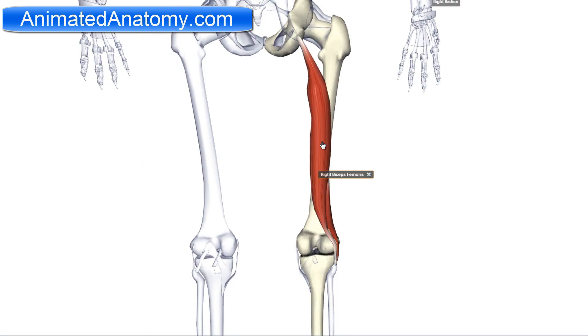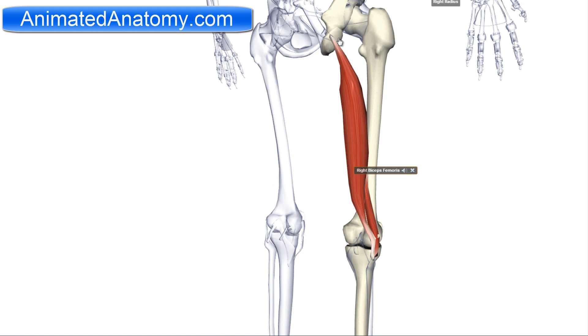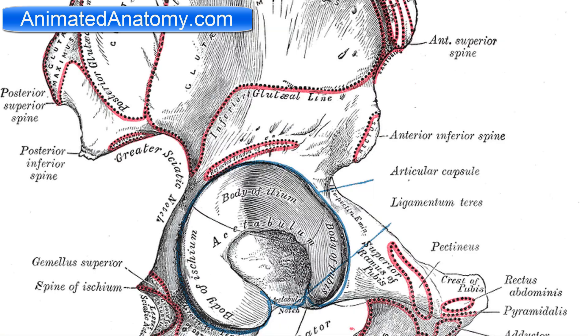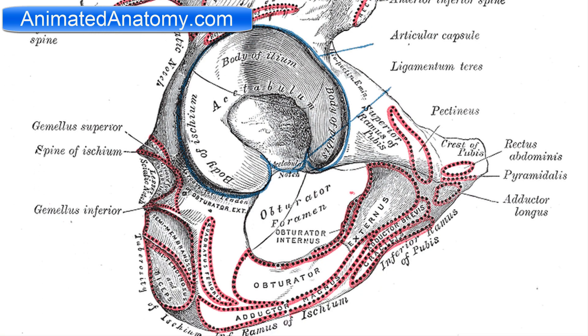The long head has the origin on the ischial tuberosity, here on the ischium. If you look at it here, it says biceps — right there where it originates.